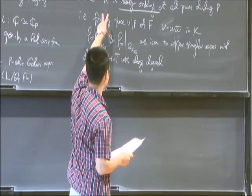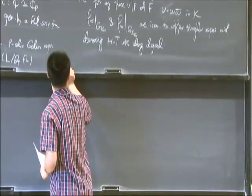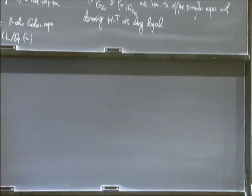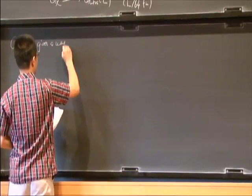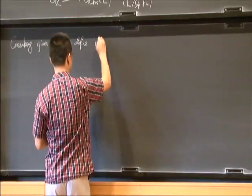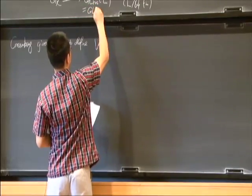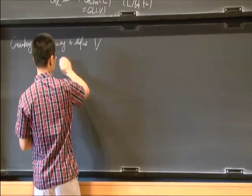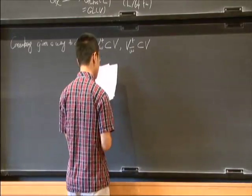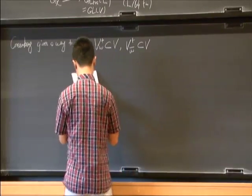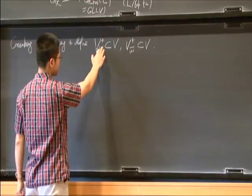This is the definition of ordinary. Of course, there is a definition using only the local component of π, but here is an easier way to define it. Then Greenberg gives a way to define some submodule. This basically consists of a subspace of strictly positive Hodge-Tate weights, which explains the notation plus.